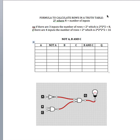One of the things you need to know is how to calculate the number of rows required in a truth table. That works with the formula 2^n, where n equals the number of inputs. So for example, if I have 3 inputs such as a, b and c, then n becomes 3, so that's 2 to the power of 3, which is 2 times 2 times 2, which equals 8. That tells us we need 8 rows in our table.